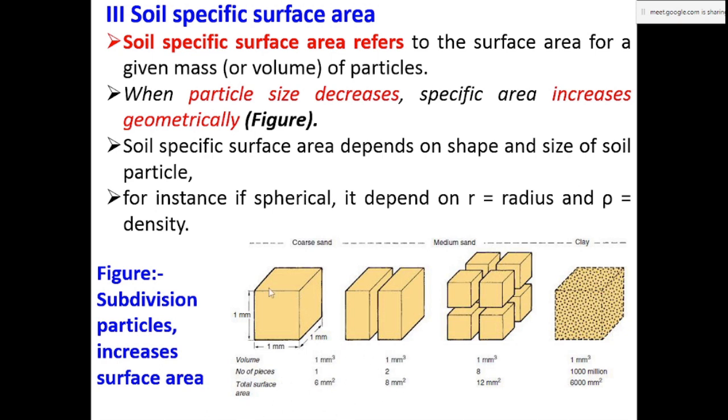If this coarse sand cube is divided into two, then the surface area increases, meaning the specific surface area increases. Number of pieces is two, and the surface area increased by two to eight square millimeters.